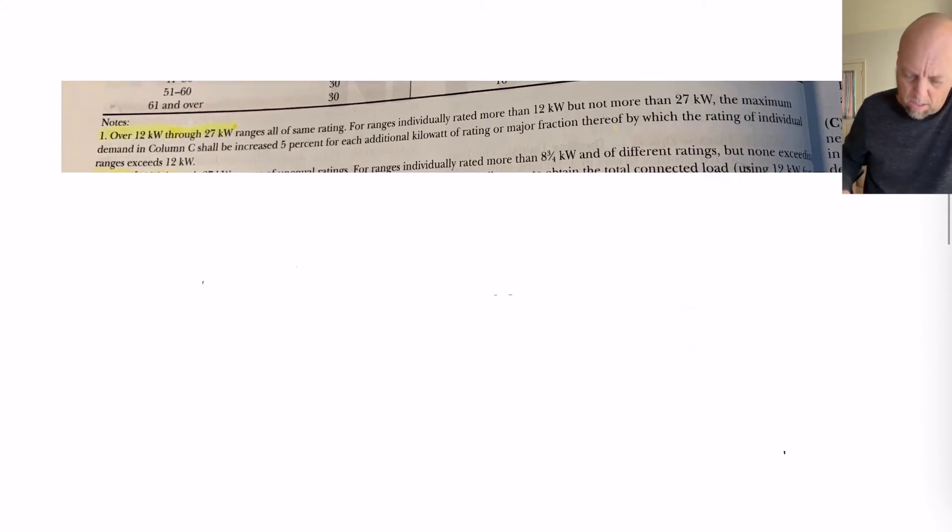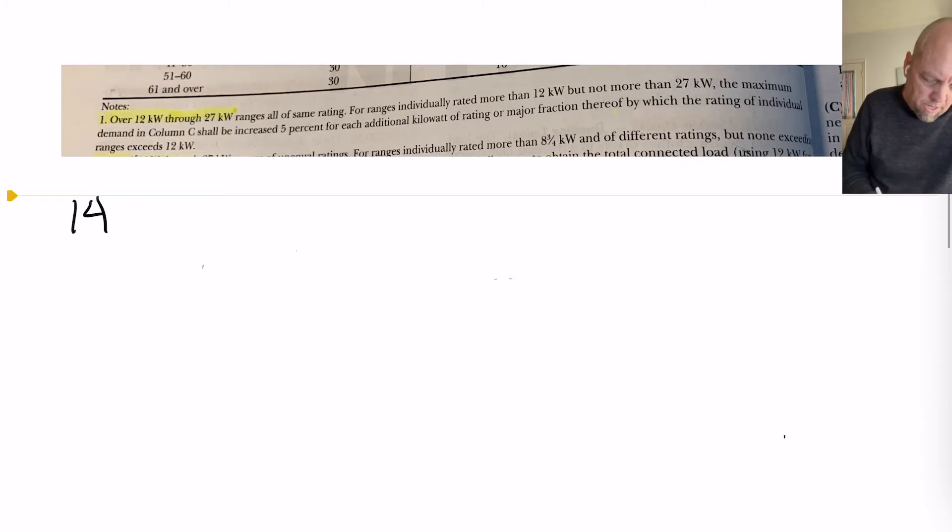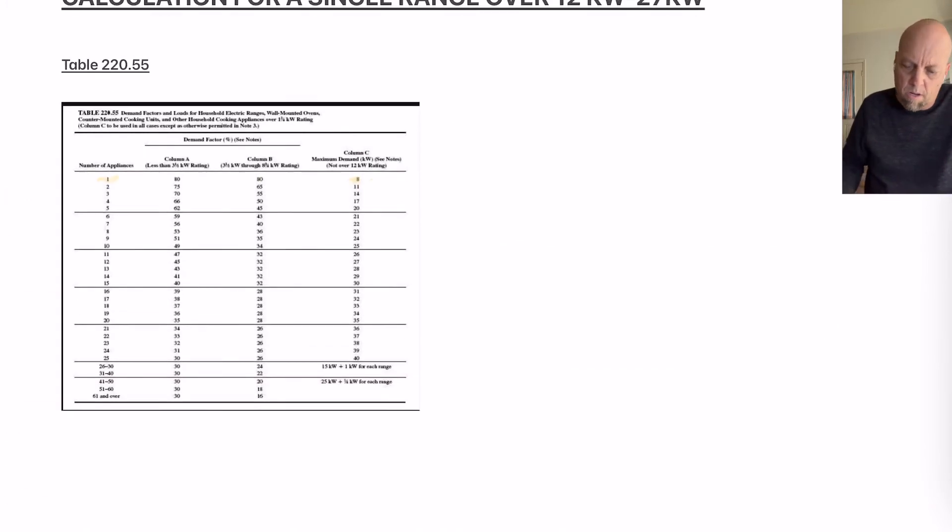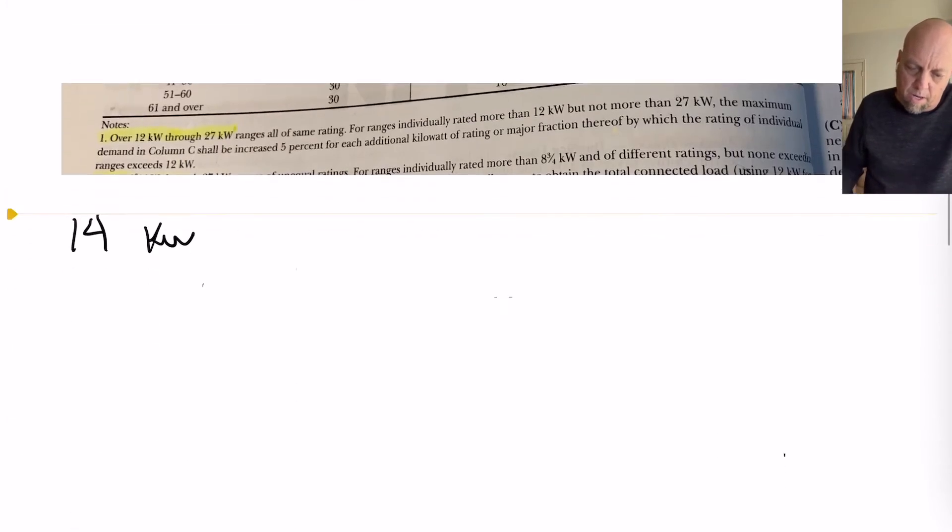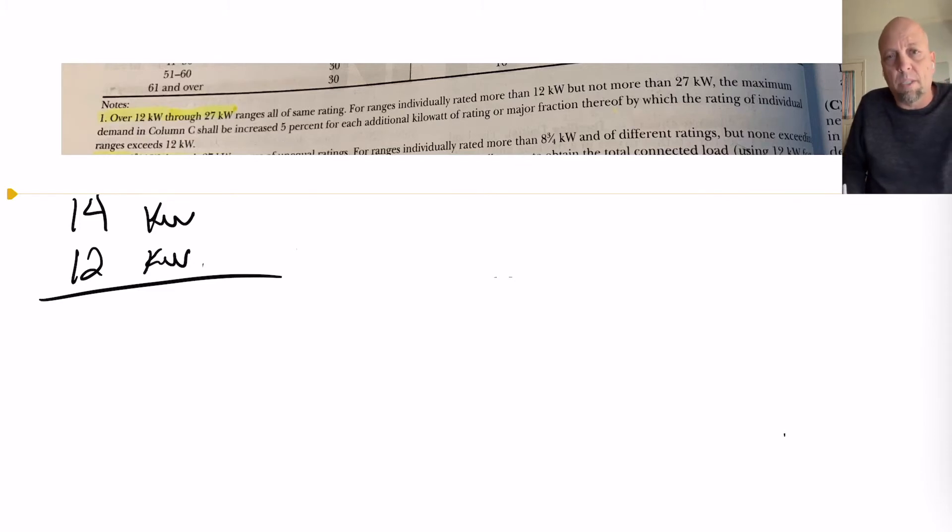So, let's say we have a 14kW range. Now, we have to figure out our calculation for our load. Well, we know that 12kW, we have to subtract this from 14kW because column C stops at 12kW. So, we have 2kW,